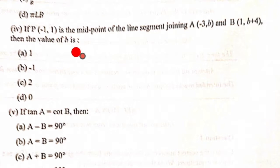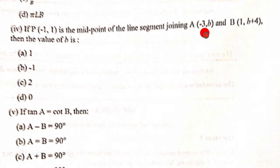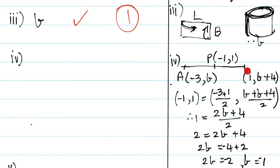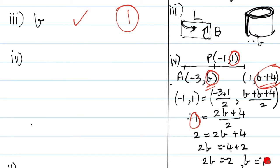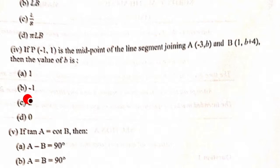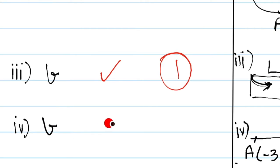Fourth question: If P(-1, 1) is the midpoint of the line segment joining A and B, with coordinates given, find the value of B. The choices are 1, -1, 2 and 0. Using the midpoint formula (x1+x2)/2, (y1+y2)/2, we look at the y-coordinate: 1 = (y1 + y2)/2. Solving gives B equal to -1, which is option B.